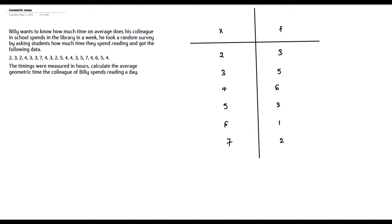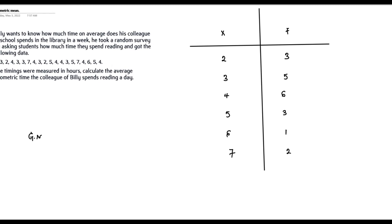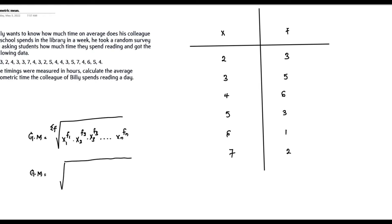The formula for the geometric mean when data is grouped by score is: GM = the (Σf)th root of x1^f1 × x2^f2 × x3^f3 × ... × xn^fn. The summation of frequencies is 3 + 5 + 6 + 3 + 1 + 2, which gives us 20. So we have the 20th root.